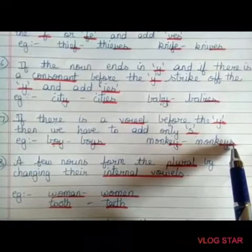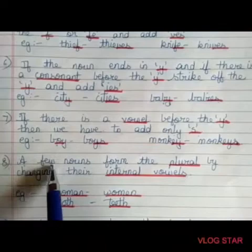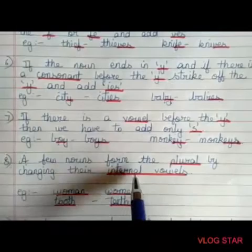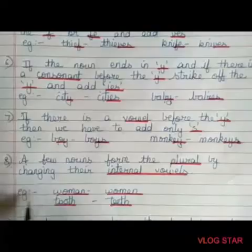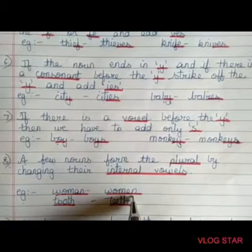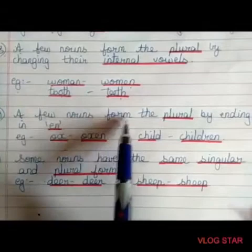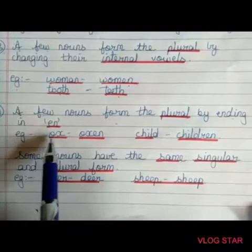Here are some different rules. A few nouns form the plural by changing their internal vowels. Example: woman becomes women; tooth becomes teeth. A few nouns form the plural by ending in 'en'. Example: ox becomes oxen; child becomes children.